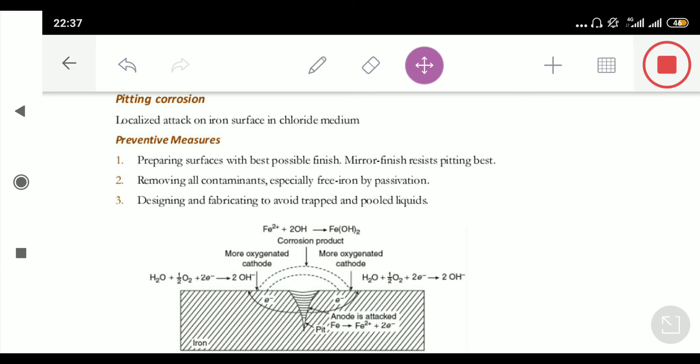In case of concentration cell, the EMF is going to be positive only when the concentration of cathodic electrolyte is greater than the concentration of anodic electrolyte. In the same way,